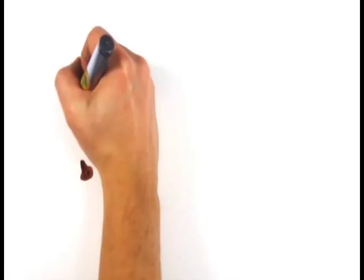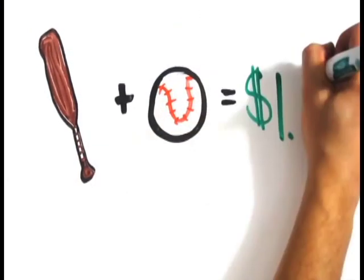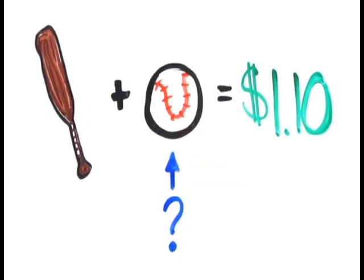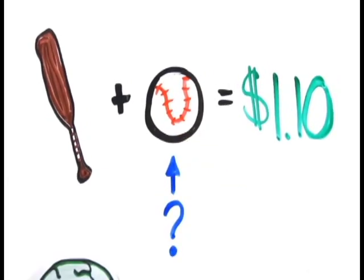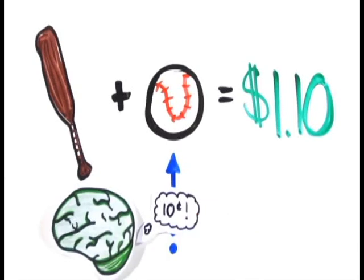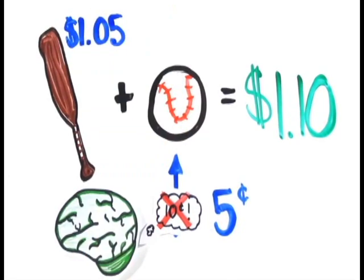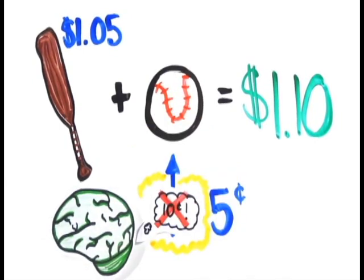Listen to the following puzzle. A bat and a ball cost one dollar and ten cents. The bat cost one dollar more than the ball. How much does the ball cost? Chances are, your system one intuition was yelling ten cents. But this appealing system one answer we know is wrong. In fact, the correct answer is five cents. Even if you worked out the correct answer, you likely thought of ten cents along the way.